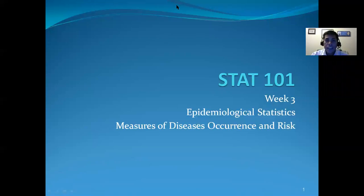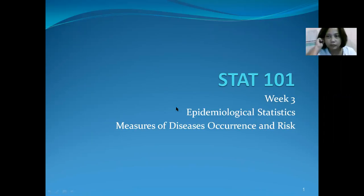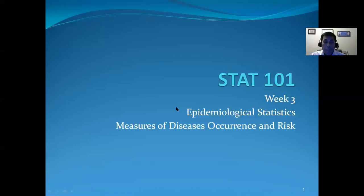Welcome. It's week three and this week is actually really important because epidemiological statistics are the basis for other advanced statistics. For example, if you are going to use chi-square statistics, the principles behind a two-by-two table is exactly the same principle that chi-square statistics is going to use. It's basically what's the observed frequency versus the expected frequencies, and that's pretty much what's happening in epidemiology.